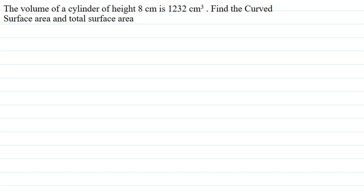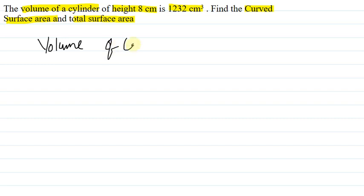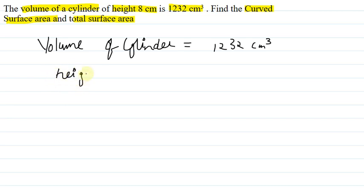Hello students, I will be your teacher for this question. The question says: the volume of a cylinder of height eight centimeters is 1232 centimeter cube. Find the curved surface area and the total surface area. So it is given to us that the volume of the cylinder is equal to 1232 centimeter cube, and the height of the cylinder is eight centimeters.